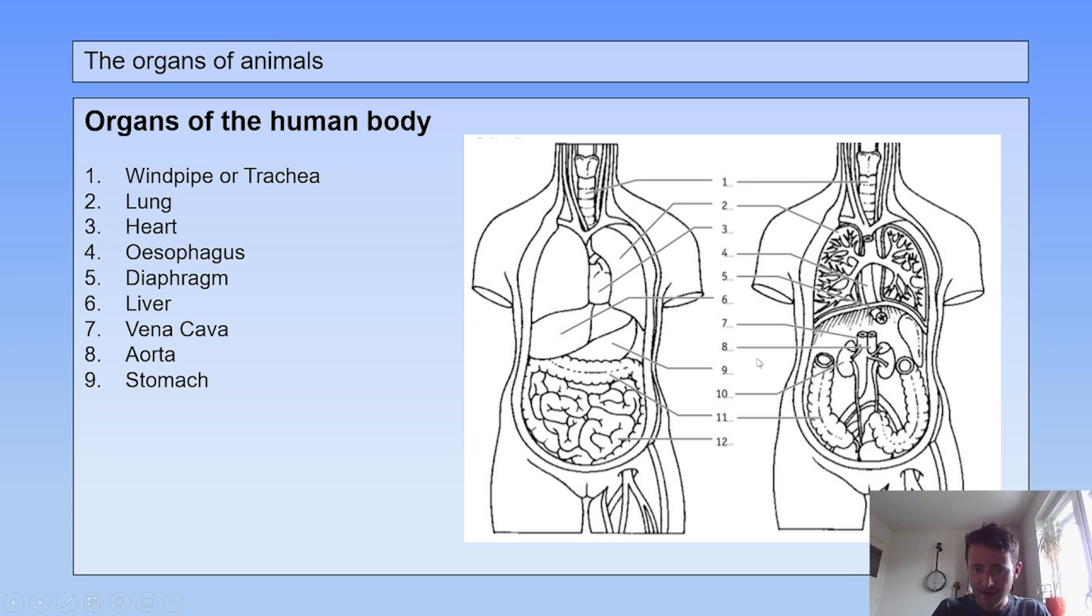Number nine is the stomach. Number ten is one of your kidneys. You have two kidneys. They filter your blood. Eleven is the large intestine. Twelve, the small intestine.